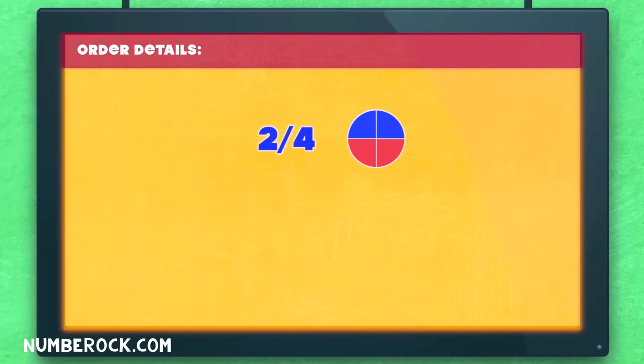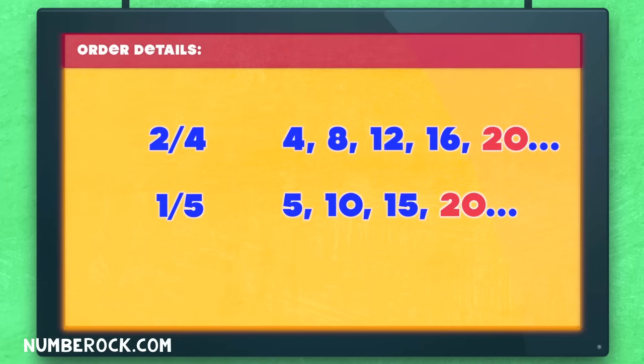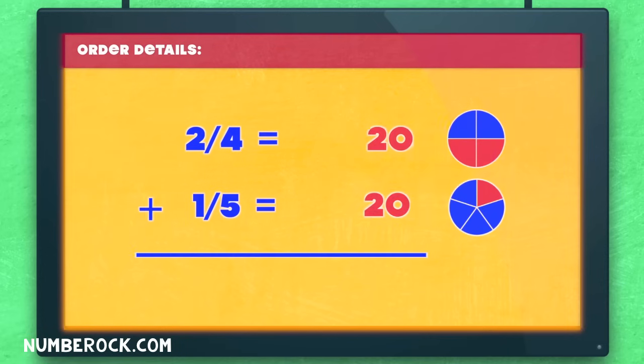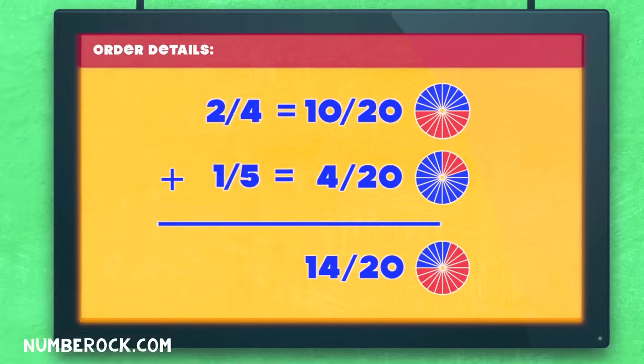Two-fourths of a pizza plus one-fifth. It smells so good, we had to give it a sniff. The LCM was twenty, the new denominator. We found equivalents quickly: ten-twentieths plus four-twentieths. Fourteen-twentieths of a pizza at the pizzeria.